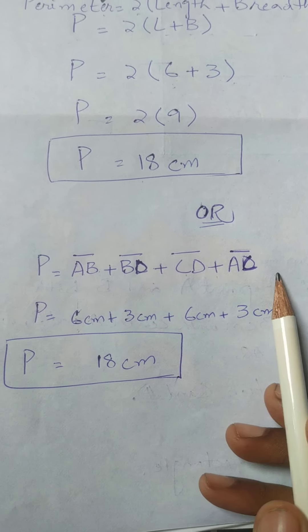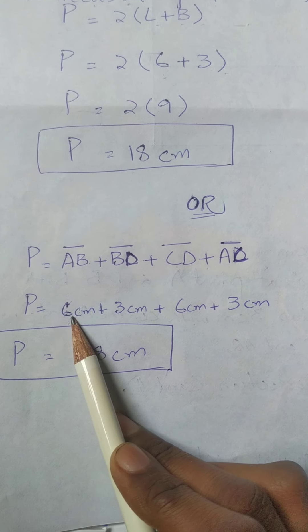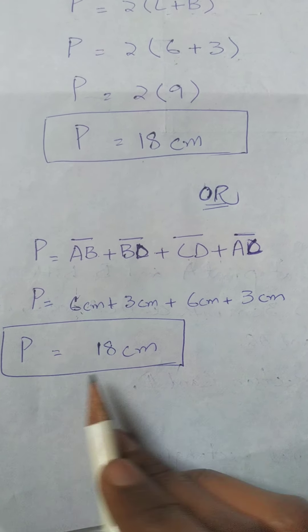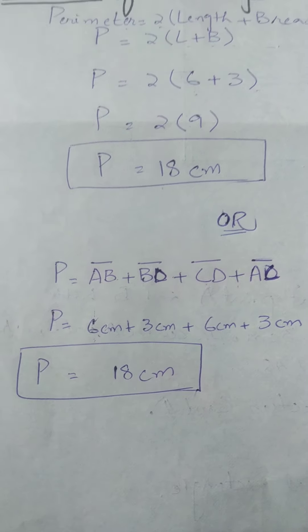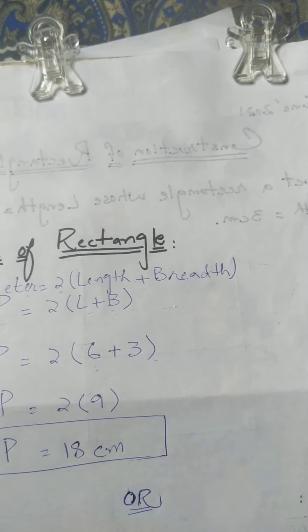AB + BD + CD + AC. We have written all four sides, and this also equals 18 cm. But if we have a formula and we know the formula, we should use it.